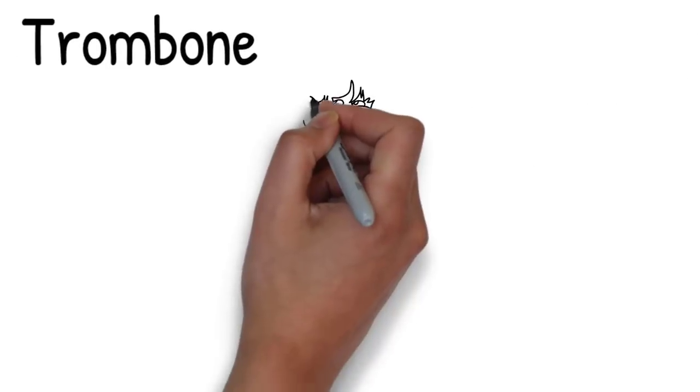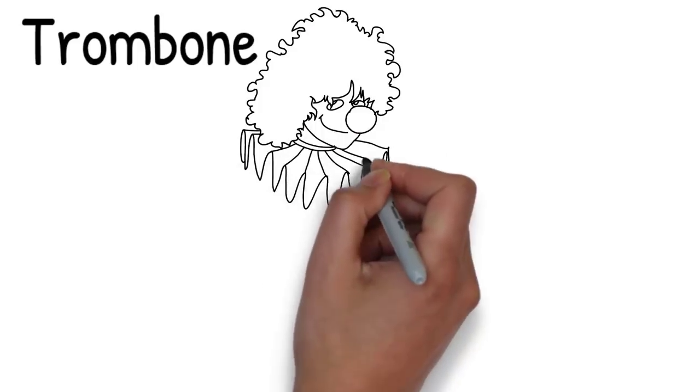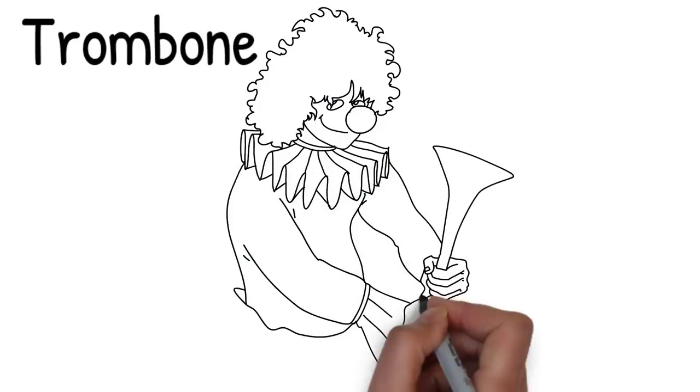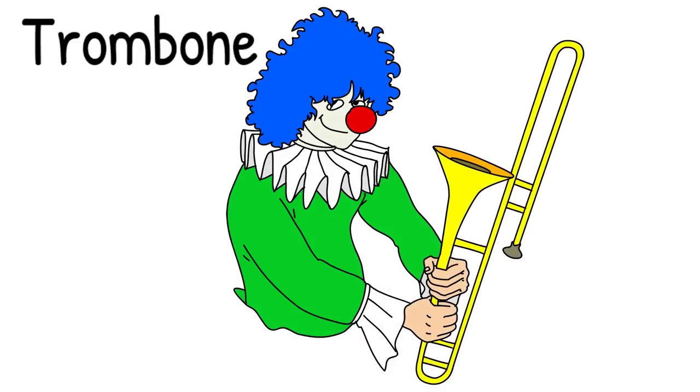The clown pulls out a trombone and holds it up like a sword. Is the trombone a weapon or an instrument of torture? A trombone could have dangerous potential.